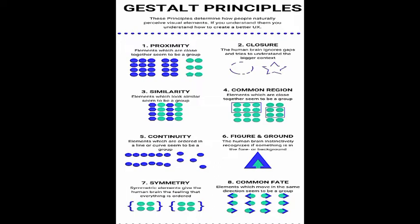Next we have the law of common region. Elements which are close together seem to be a group. If you look at that diagram, you can get a clear idea of this principle.